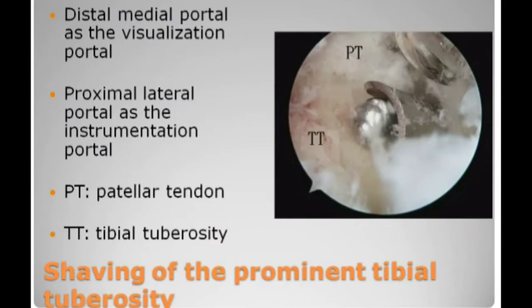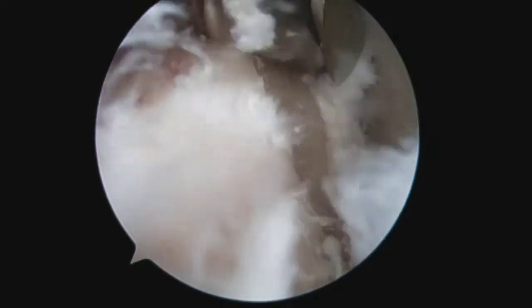The next step is shaving of the prominent tibial tuberosity. It is important to identify the tibial tuberosity and the patellar tendon insertion, and the bone shaving should not violate the tendon insertion.